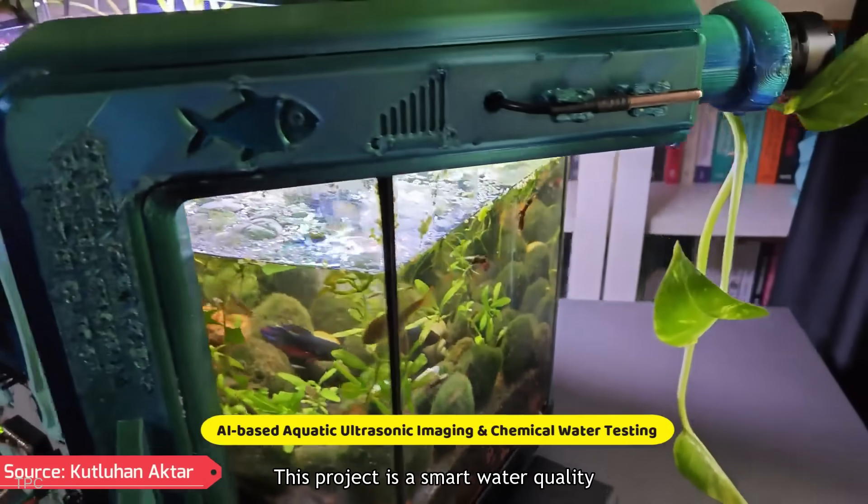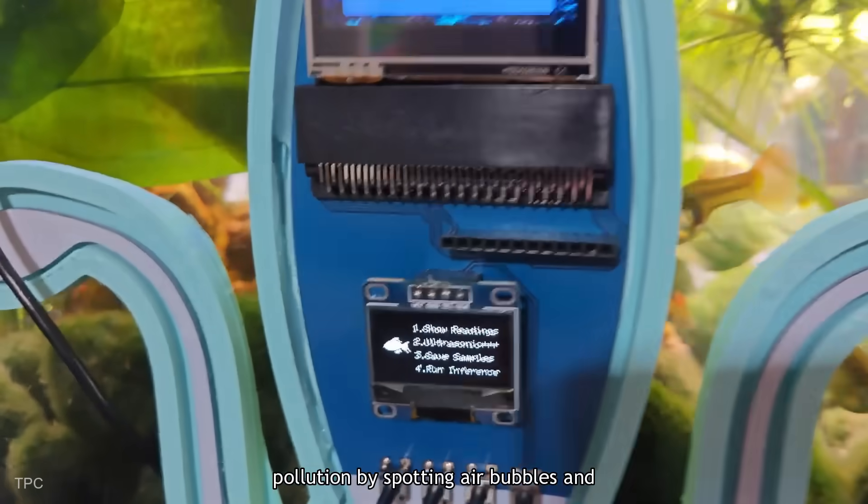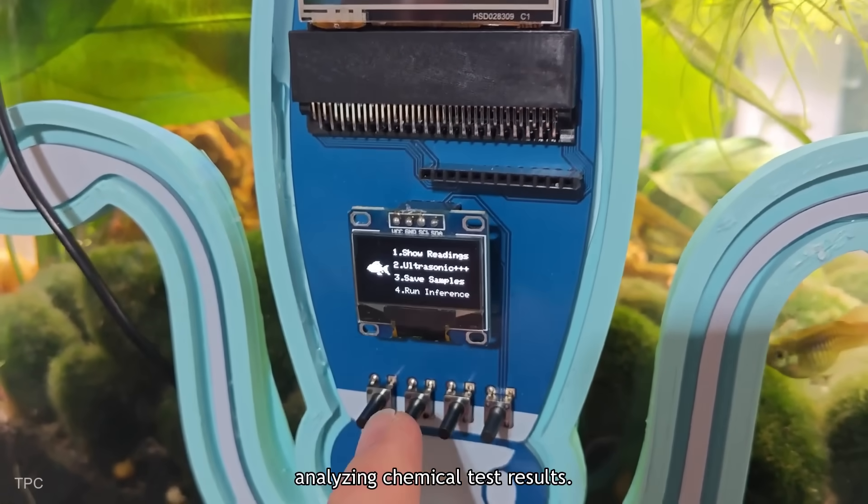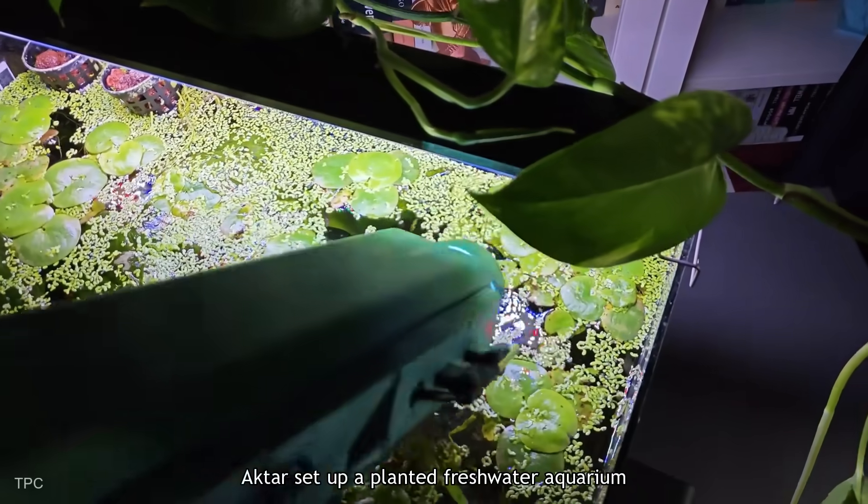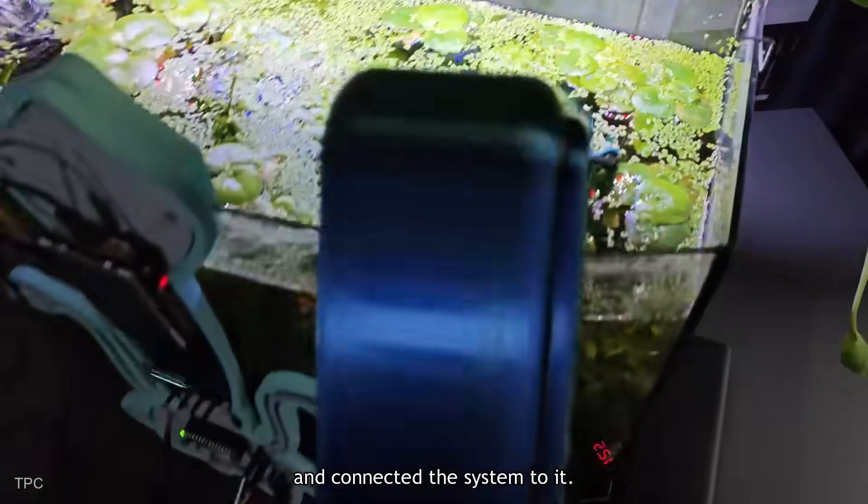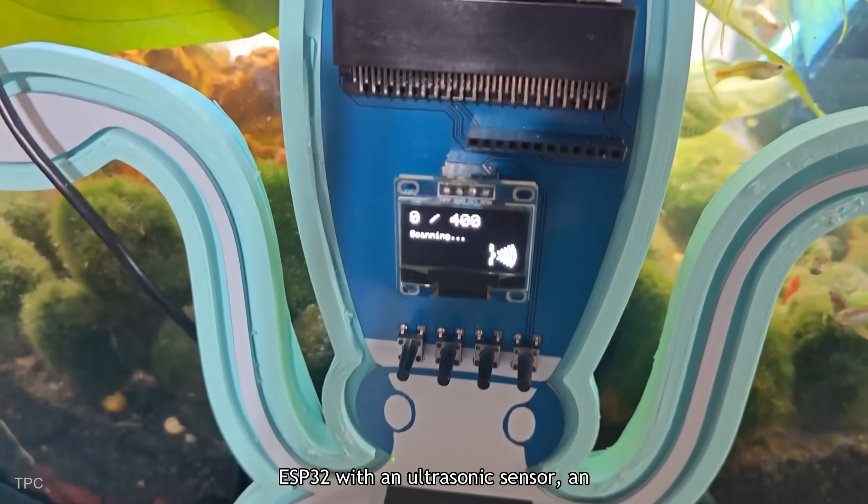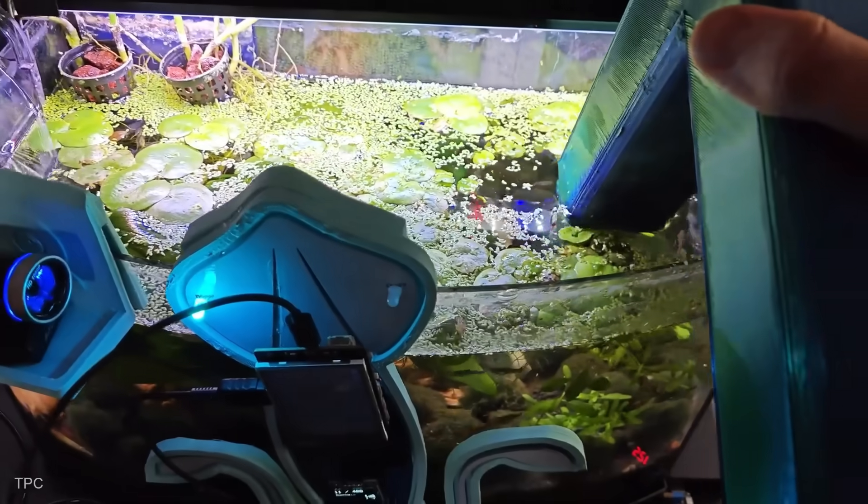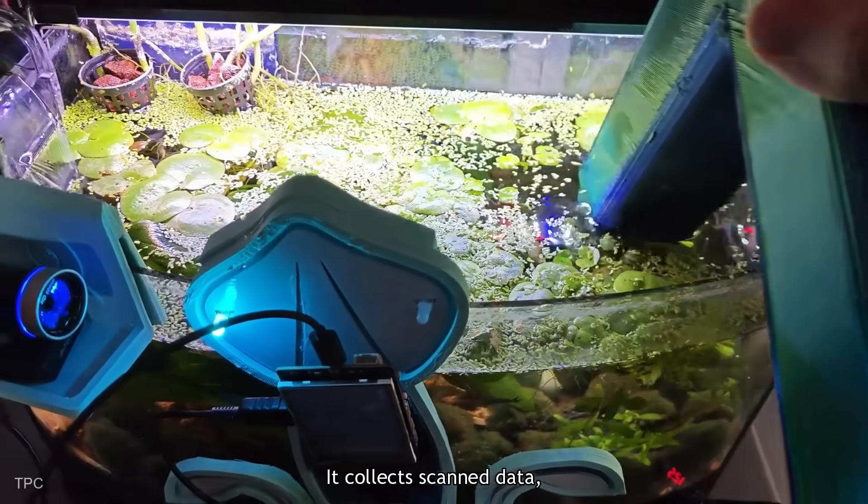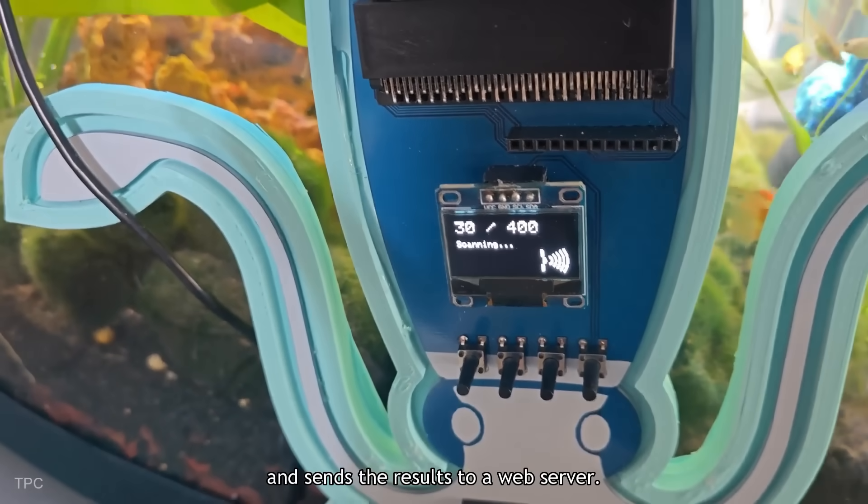Number 1. This project is a smart water quality monitoring system designed to catch early signs of underwater pollution by spotting air bubbles and analyzing chemical test results. To simulate polluted water conditions, Akhtar set up a planted freshwater aquarium and connected the system to it. The air bubble detection unit uses a nano ESP32 with an ultrasonic sensor, an accelerometer, and a small display. It collects scanned data, runs a trained model to detect harmful air bubbles in real-time, and sends the results to a web server.